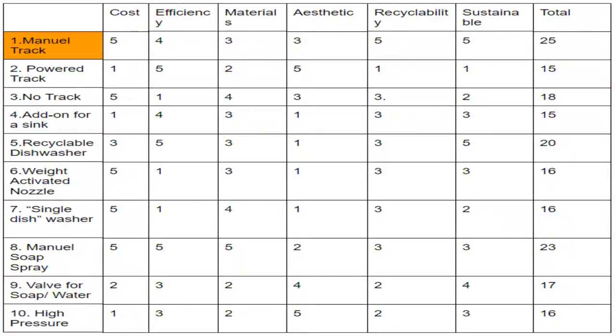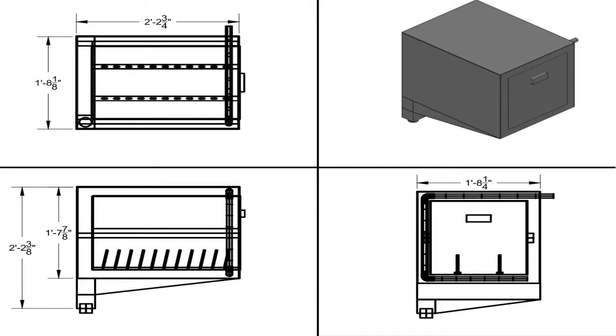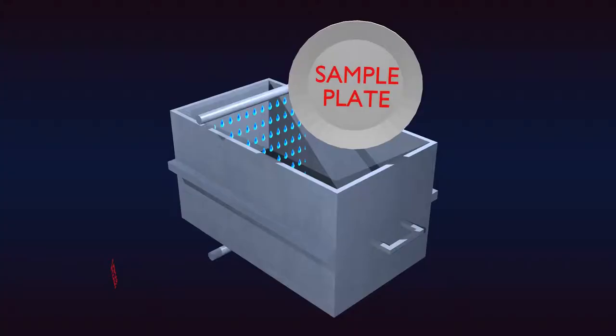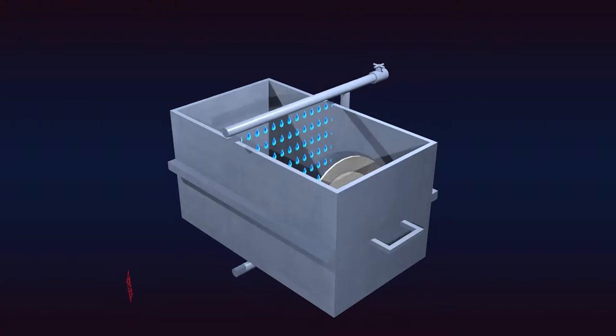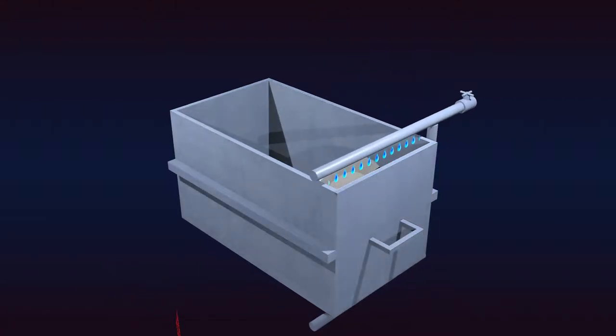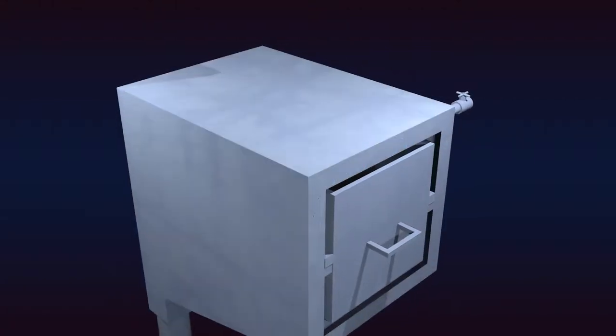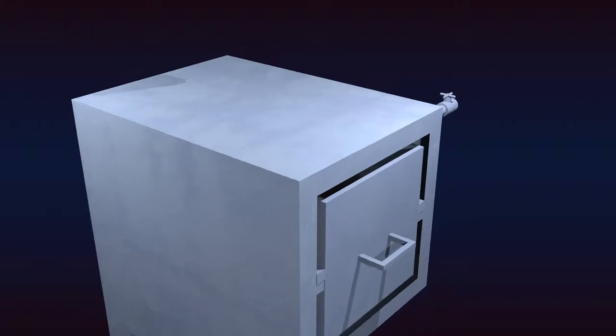Several more sketches and a design matrix later, we had settled on a drawer design which protected the user's hand. This dishwasher kept the initial idea of sliding dishes under streams of hot water, except now the user's hand was protected by a metal plate forming a shell around the drawer. This shell also collects the dirty water and expels it through a waste pipe located at the bottom.